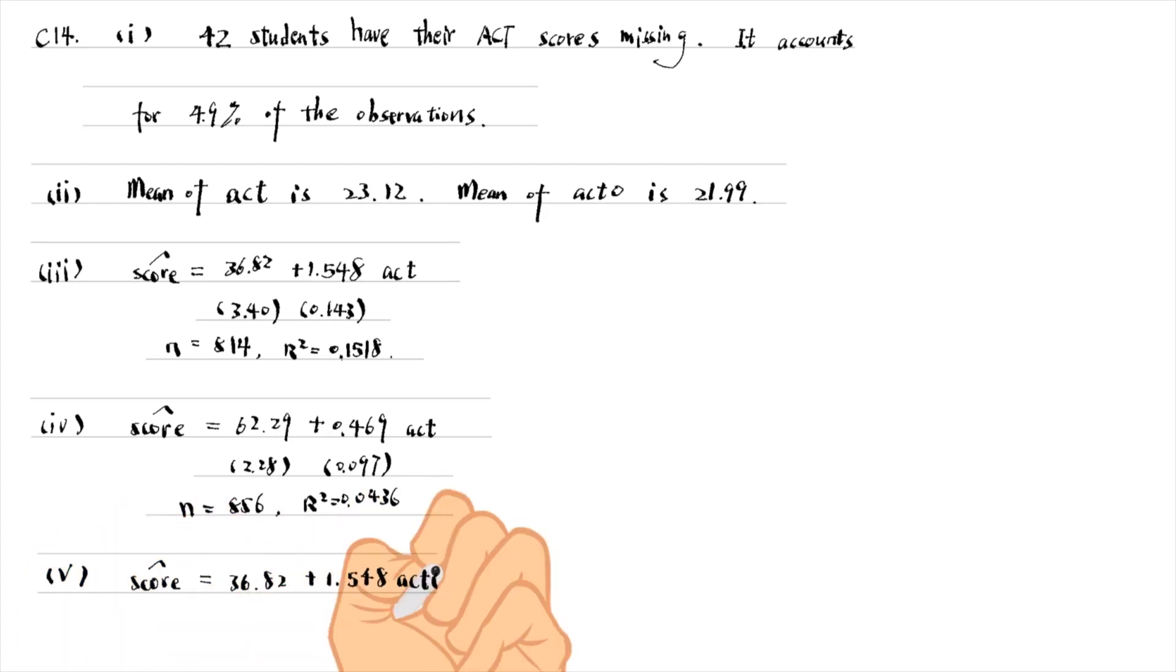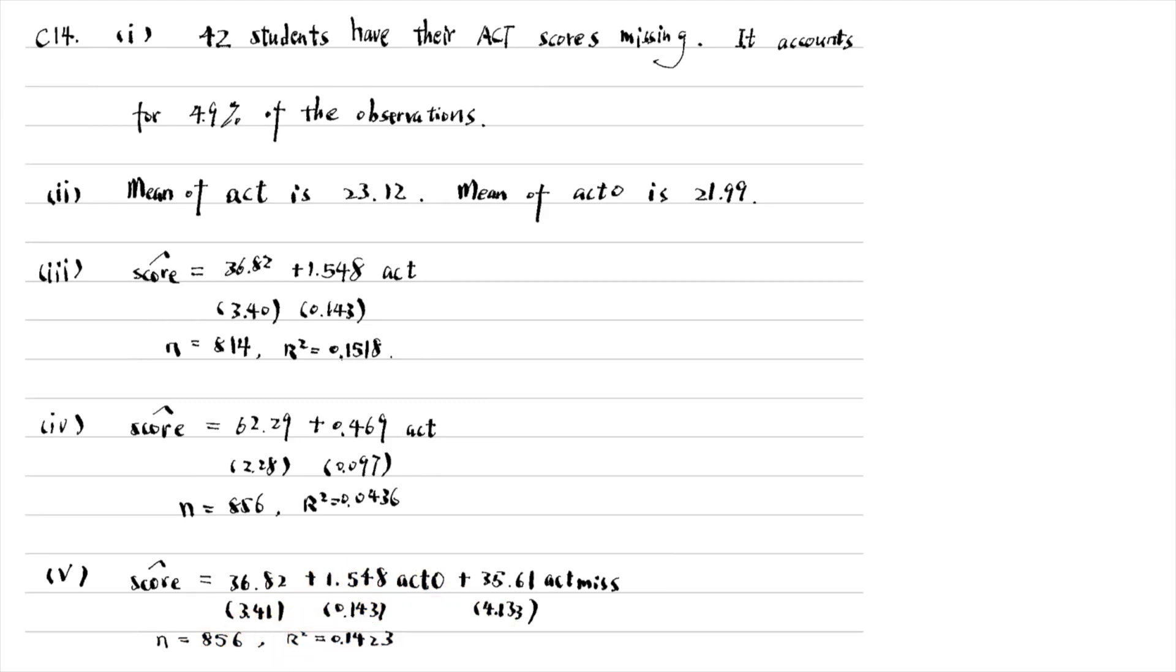In part 5, we add the dummy variable for the missing values. The coefficient on ACT0 is the same as that in part 3. There is no difference between the estimates using the non-missing data and the entire sample with the missing data indicator. For part 6, there is no difference between the estimates using the non-missing data and the entire sample with the missing data indicator.